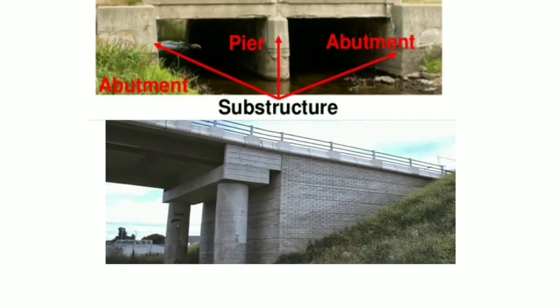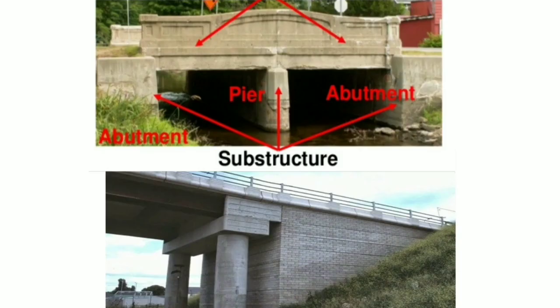In the below figure, we can see an abutment. It is very clear that the abutment retains the earthen embankment. The main difference between a pier and an abutment is that a pier is the intermediate supporting structure of a bridge, whereas abutments are the end supporting structure.